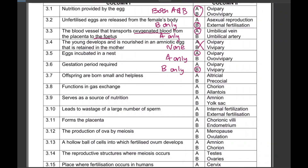'Offspring are born small and helpless' — that is altricial development, answer is A only. 'Functions in gas exchange' — that is A only. 'Serves as a source of nutrition' — that is B only.